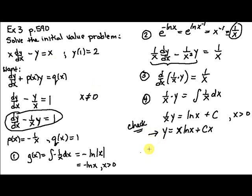And that gives us 2 equals 1 times the natural log of 1 is 0. So that's just going to be 0. Plus c. So c equals 2. So the equation or function we were looking for is y equals x natural log of x plus 2x.